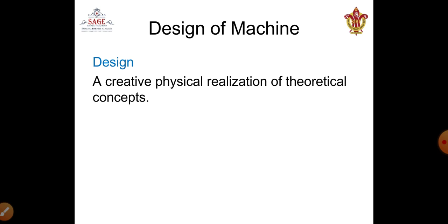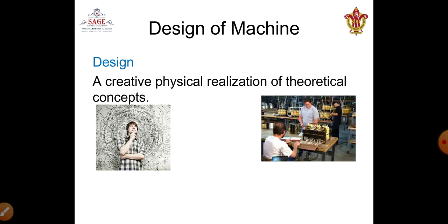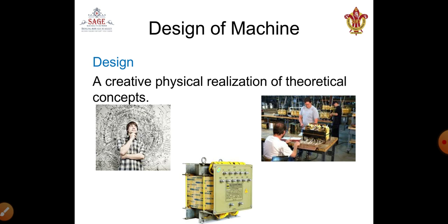Starting with the definition: design is defined as a creative physical realization of a theoretical concept. If there is some theoretical concept — maybe a fundamental law, a theorem, or some physical phenomenon — and if you can realize it physically, then we call it design. The creation first comes in your mind; if you can imagine a new creation, you can create it. Finally, you have some physical form or body that can be created, starting from your conceptualization of that particular product.